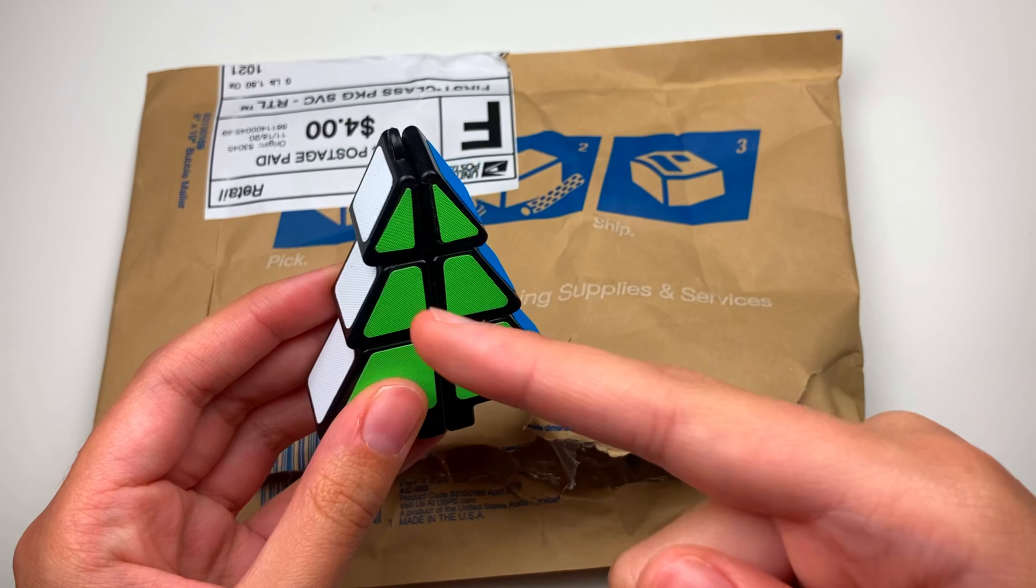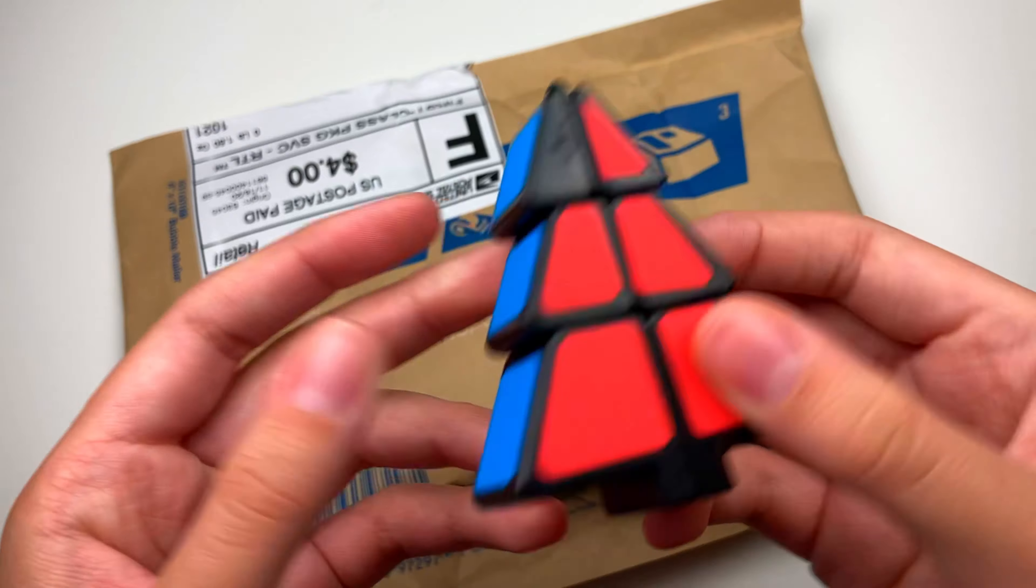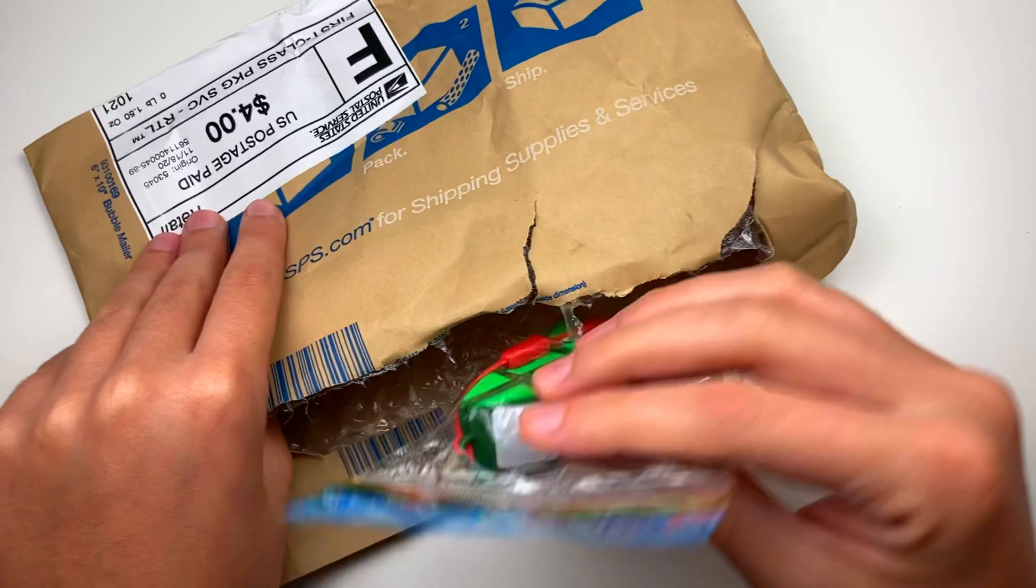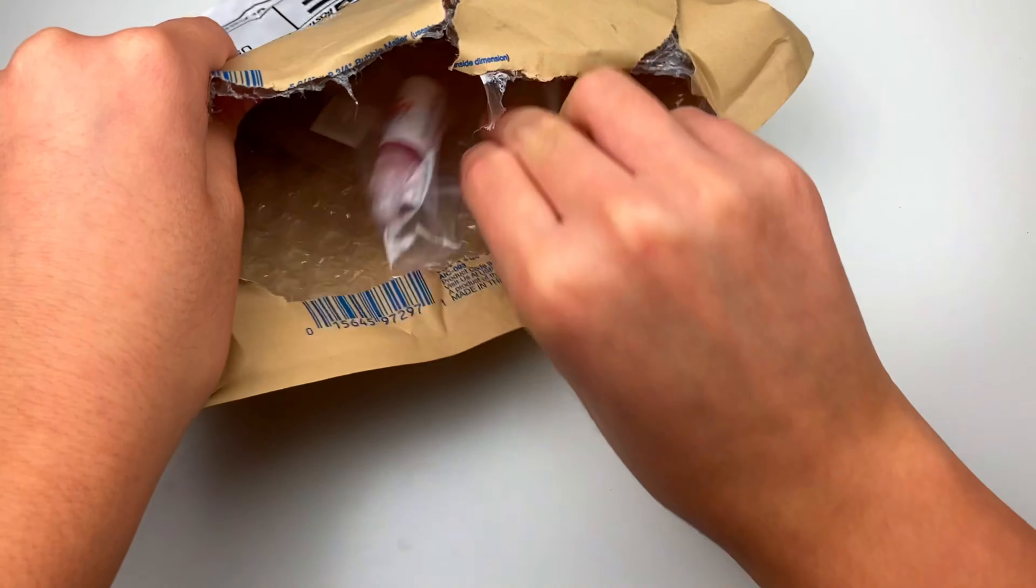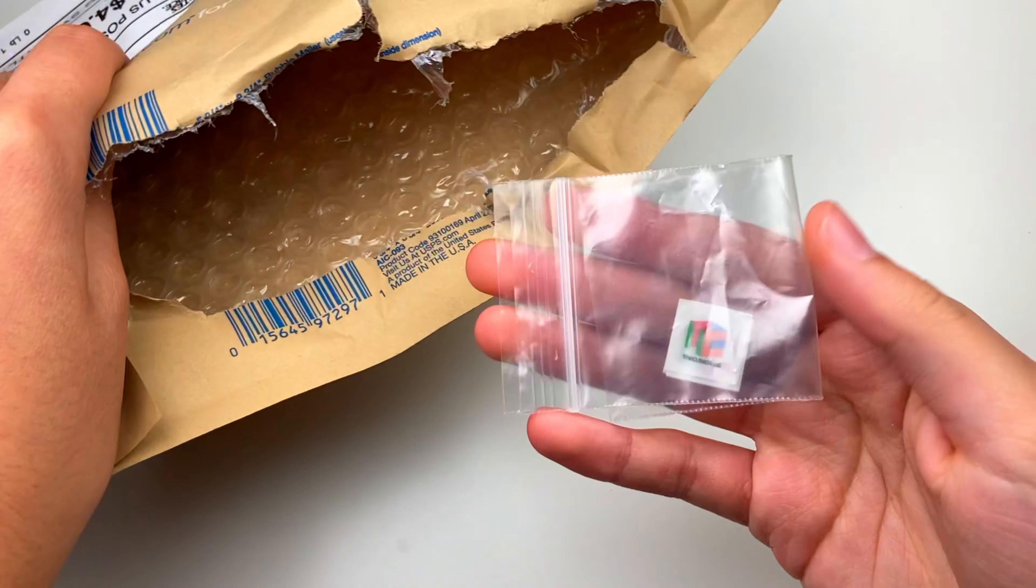Another thing is we have the Z Cube 3x2x1. I'm pretty sure the green one is in here, which is cool to add to the collection. Plus this one is missing a sticker, so it's nice to have. Yep, it's in green.